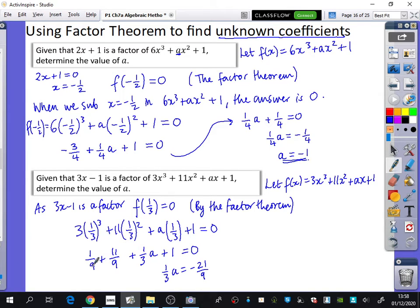So a/3 = -21/9. You've got 1/9 + 11/9 is 12/9 plus 9/9. You can just use a calculator if you want to. If I just finish this bit off here, multiply both sides by 3, and you get -21/3.